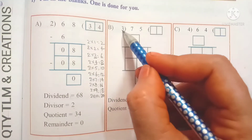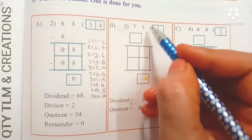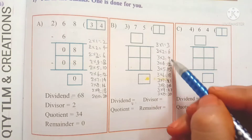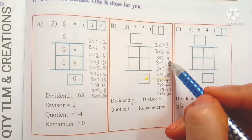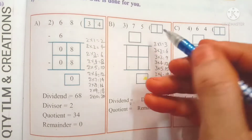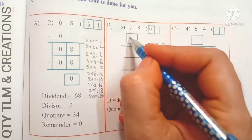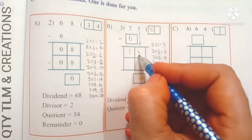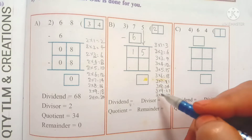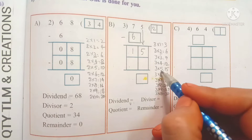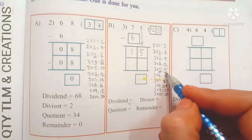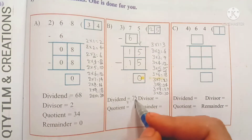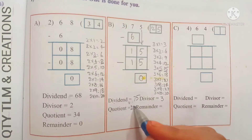Next: 75 divided by 3. Division starts from the highest place value, which is 7. Observe the 3 times table — 3 threes are 9 and 3 twos are 6. Since 9 is bigger than 7, we take 3 twos are 6. Write 2 in the quotient's place and 6 under 7, subtract: we get 1. Bring down 5; it becomes 15. 3 fives are 15, so write 5 in the ones place. Subtract 15 from 15: remainder is 0. Dividend is 75, divisor is 3, quotient is 25, remainder is 0.